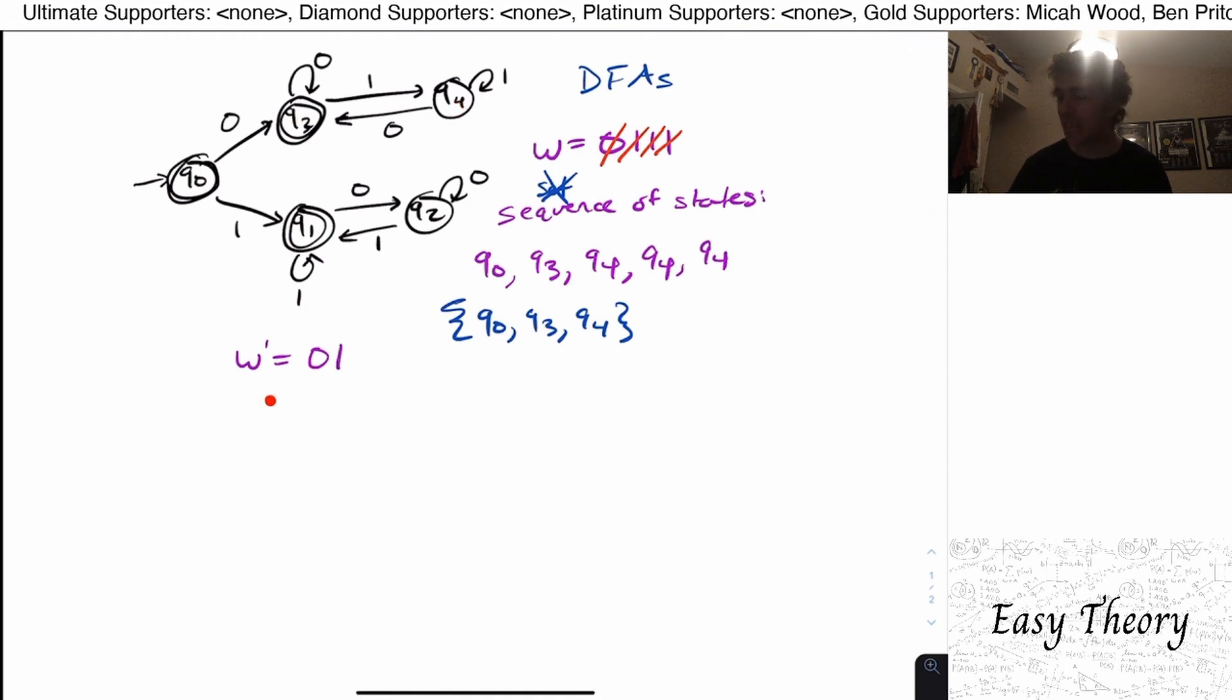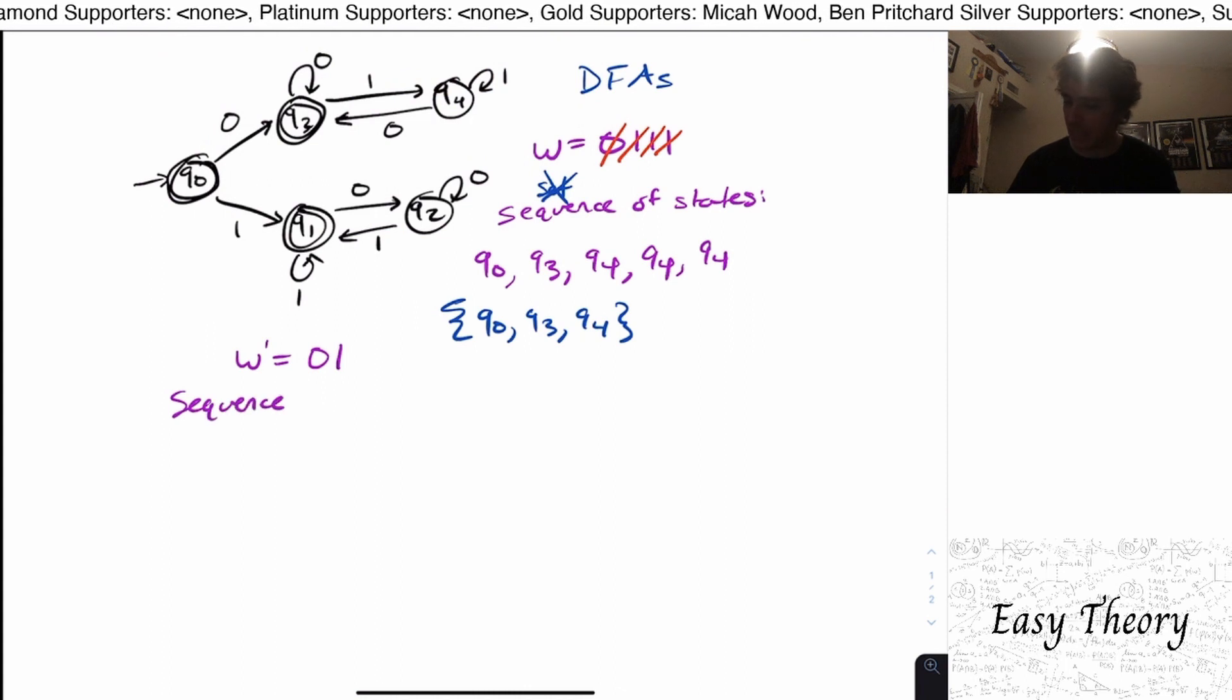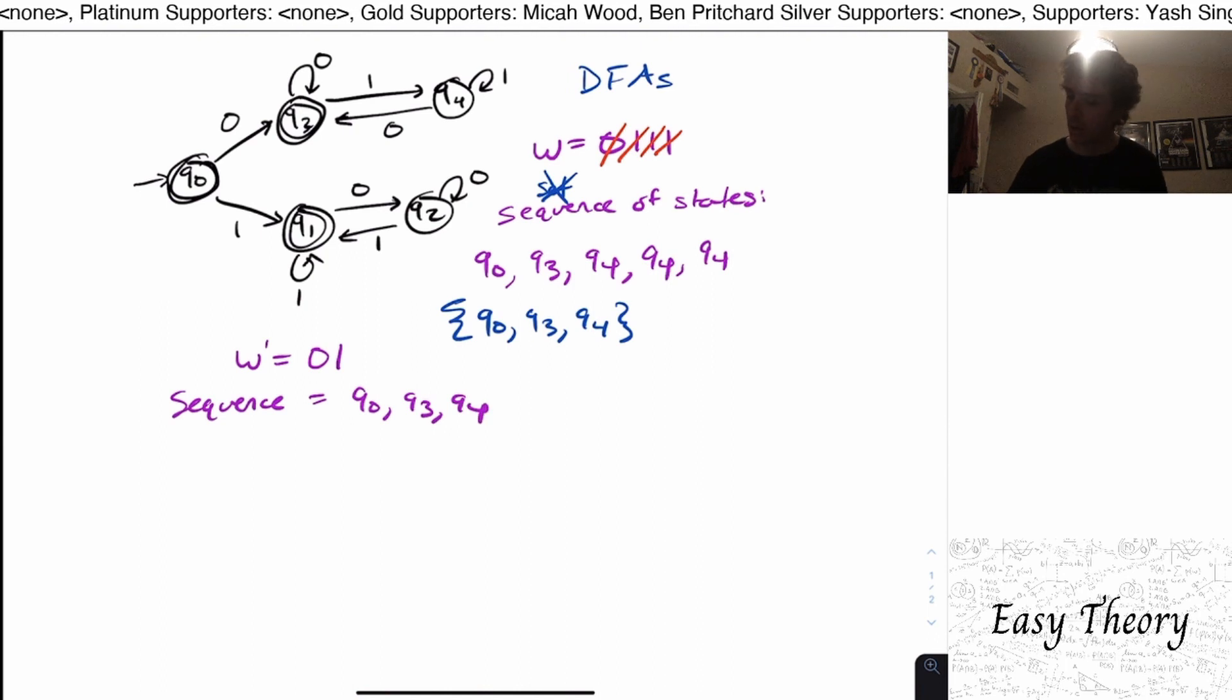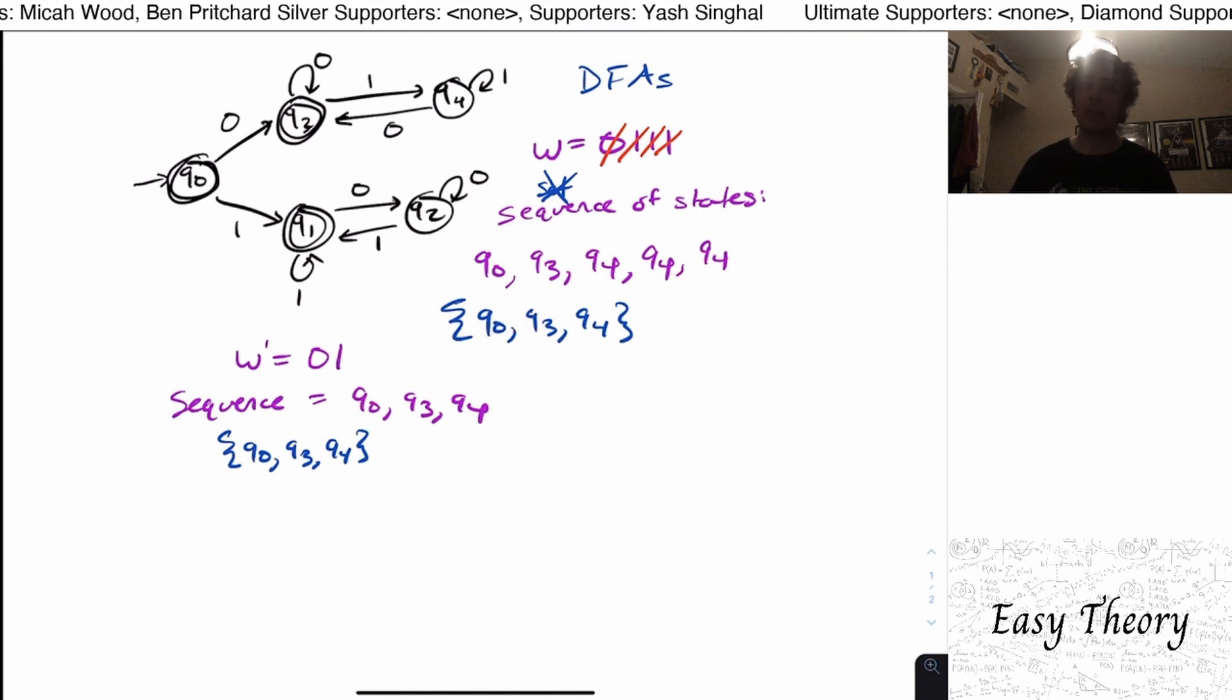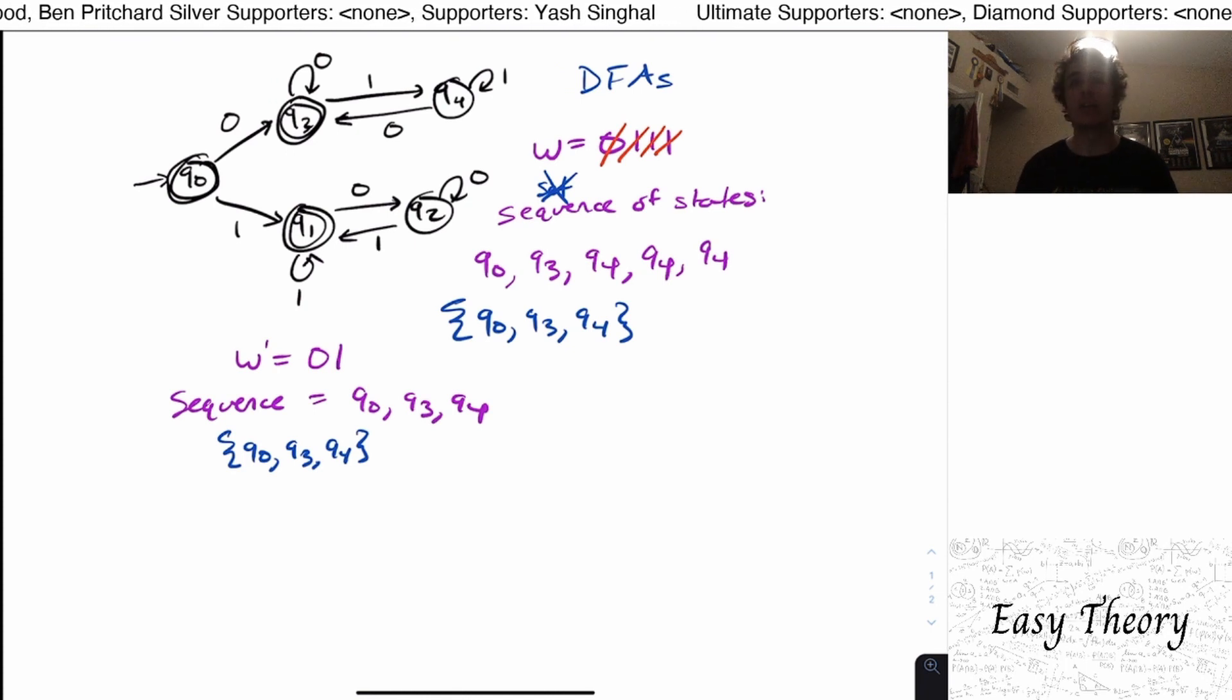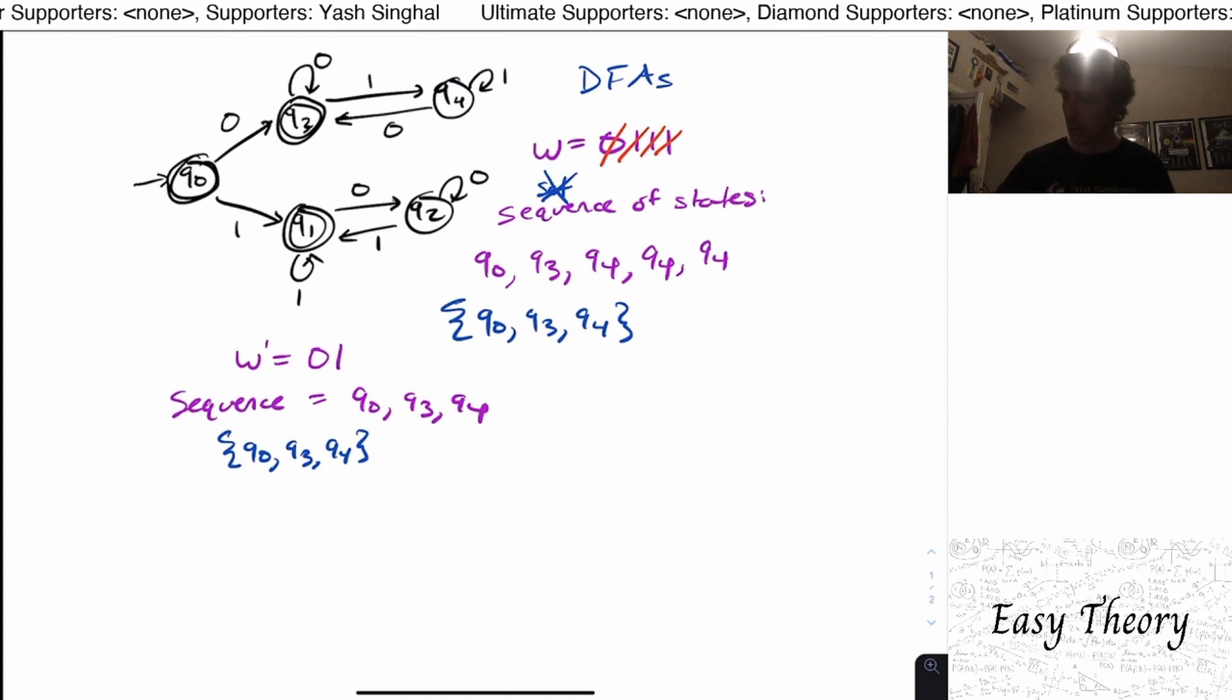But then that means that the set of states that I visit is exactly the same as this one. So the sequence of states that I visit in this case is q0, q3, q4, in that order. But the set of states that I visit is q0, q3, q4, because there's no duplicates here. But then we eliminate duplicates here. So notice that these two sets are the same.